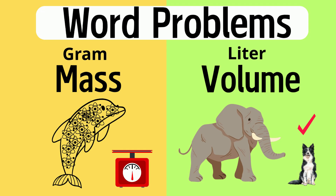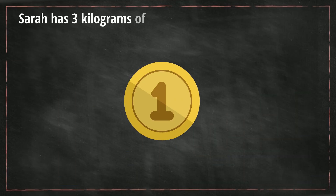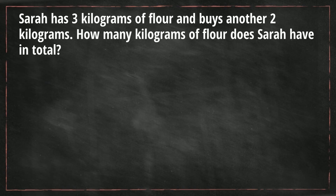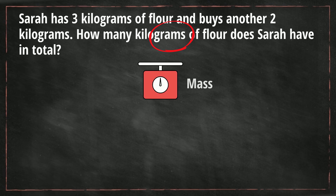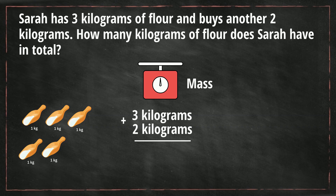Let's get started with some word problems. Sarah has three kilograms of flour and buys another two kilograms. How many kilograms of flour does Sarah have in total? First, what are they measuring? I see 'grams,' so I know that we're measuring mass. She starts with three kilograms and we're going to add another two kilograms, so she has five kilograms in total.